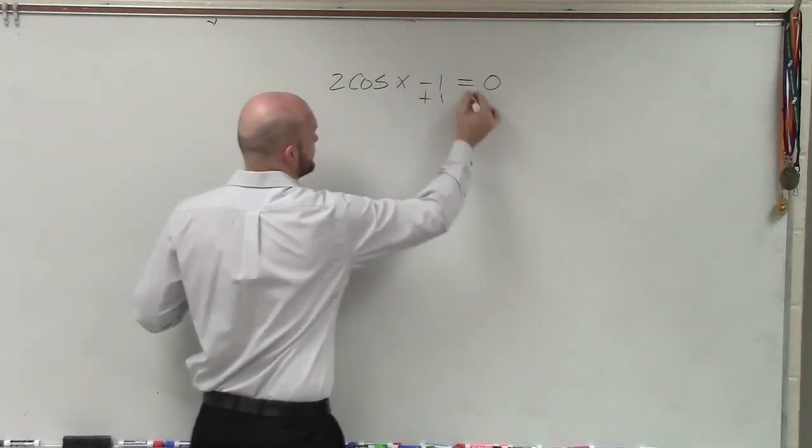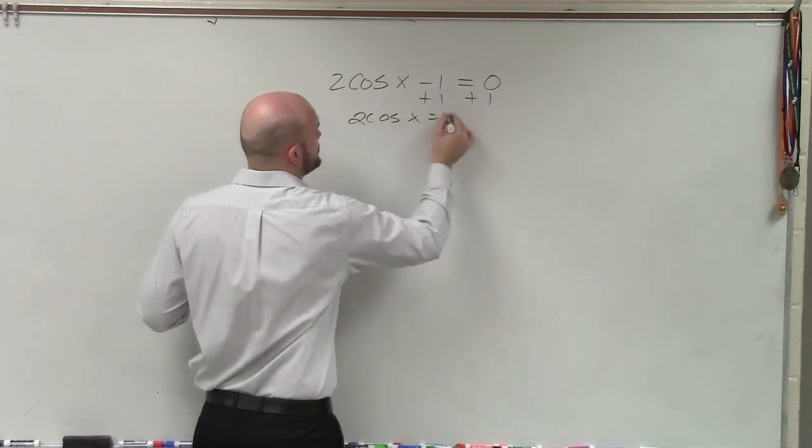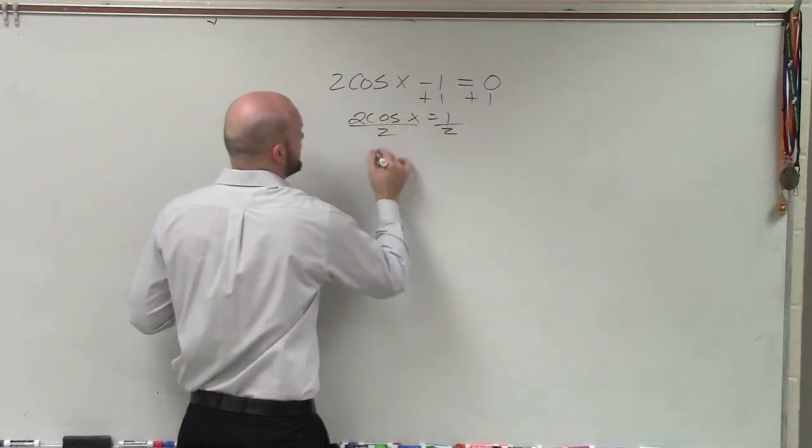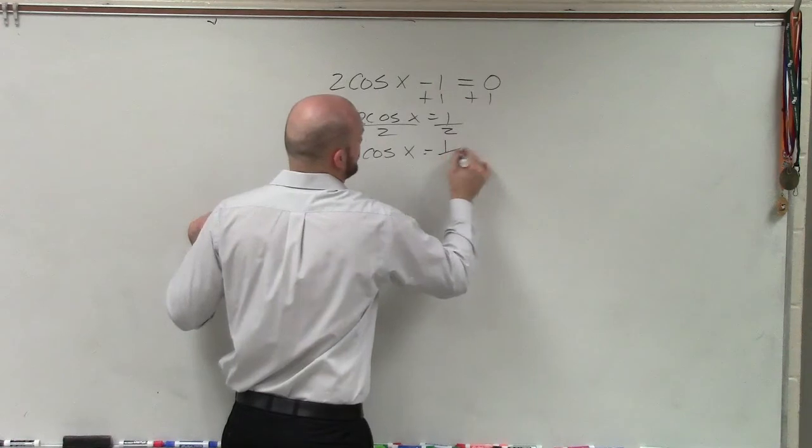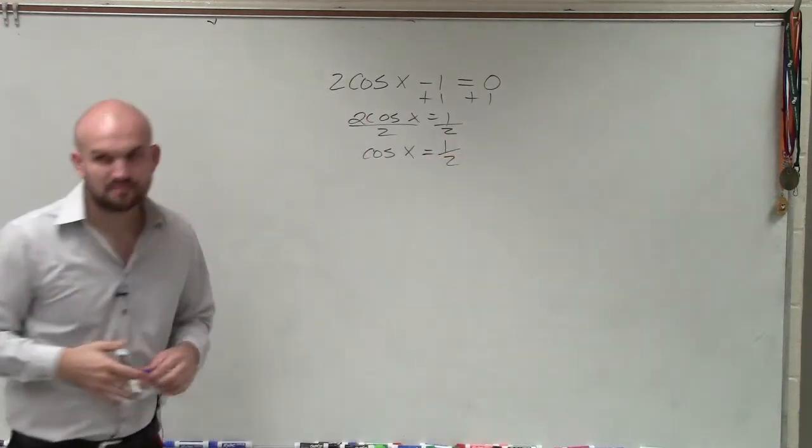If I was going to solve this, we can solve this fairly simply. 2 cosine of x equals 1, divide by 2, divide by 2, cosine of x equals 1 half. Not so bad, right?